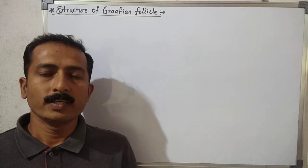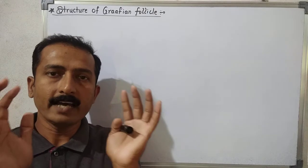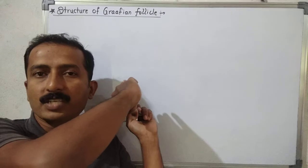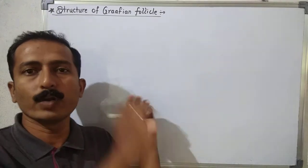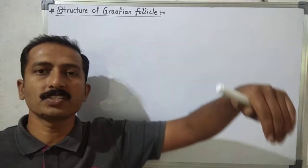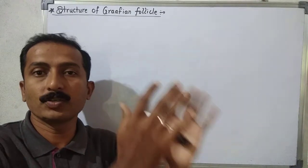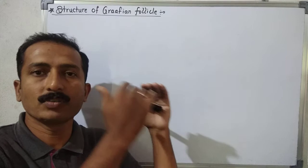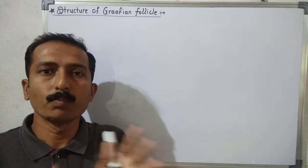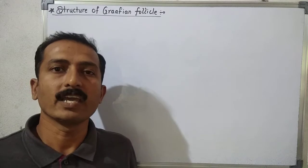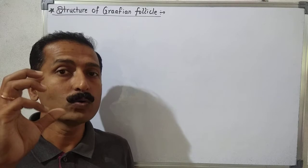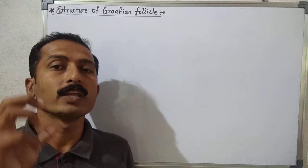In this video we shall discuss the entire structure of the mature Graafian follicle. In the previous video we have seen the different stages in the cortical region of the ovary — the responsibilities of the cortex, primordial follicle, primary, secondary, tertiary follicle, and mature Graafian follicle. After that, the mature Graafian follicle presses against the wall of the ovary and bursts to give rise to the ovum.